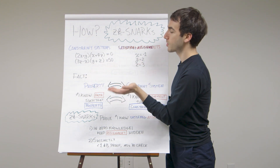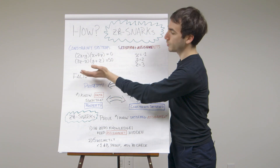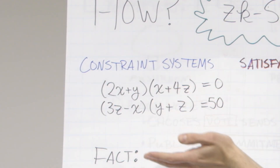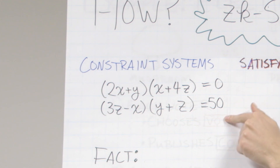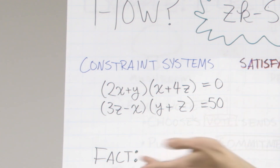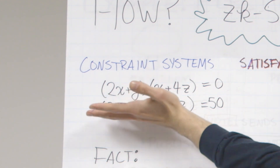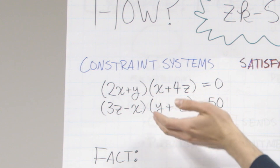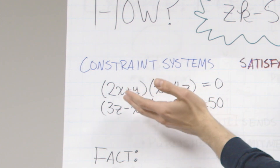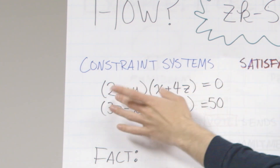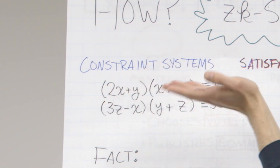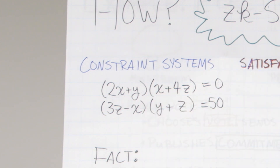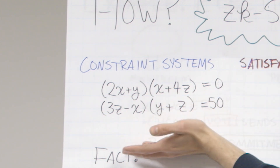The first concept I want to introduce you to is that of a constraint system. It's basically just a list of constraints where each constraint is of the form: some polynomial is equal to some constant. You can imagine a constraint system where one polynomial is equal to zero, and another polynomial is equal to 50.